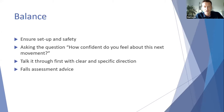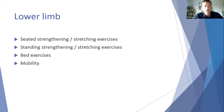Giving advice about reducing the risk of falls can be delivered quite easily over tele-rehab. For the lower limb, seated strengthening and stretching exercises can be done fairly safely, as can standing strengthening and stretching. For bed exercises, if the camera is angled toward the bed, you can look at bed mobility. Mobility work involves a dynamic element, so you'd rely on a family member to be the camera person.